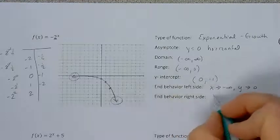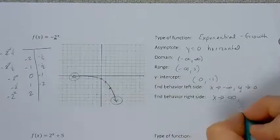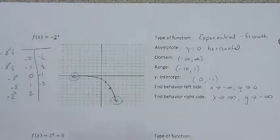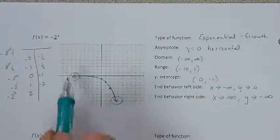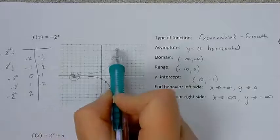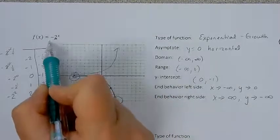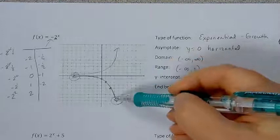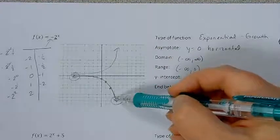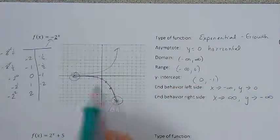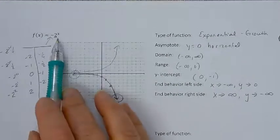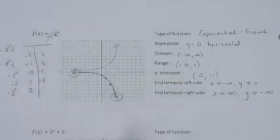On the other side, as x approaches infinity, y approaches negative infinity. What happened on this one is usually a growth goes like this, but because the negative was in front, it reflected across the x-axis. It's still a growth, even though it looks like it's going down and decreasing across the domain, because the factor is a positive 2 — it's just a reflected positive 2.